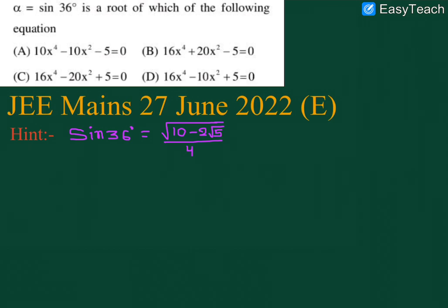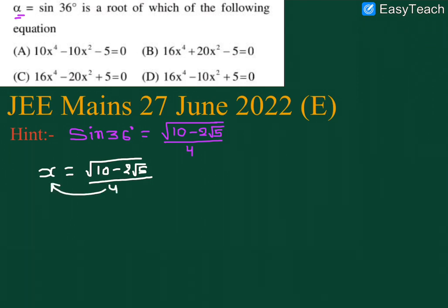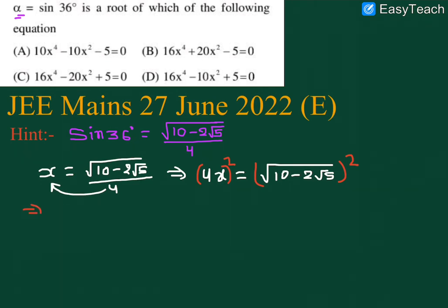So we can take alpha, or we can call it x. So x is equal to √(10 − 2√5) / 4, which means 4x is equal to √(10 − 2√5). Now our aim is to get rid of this irrational part, so we will keep the irrational part on one side and then square.